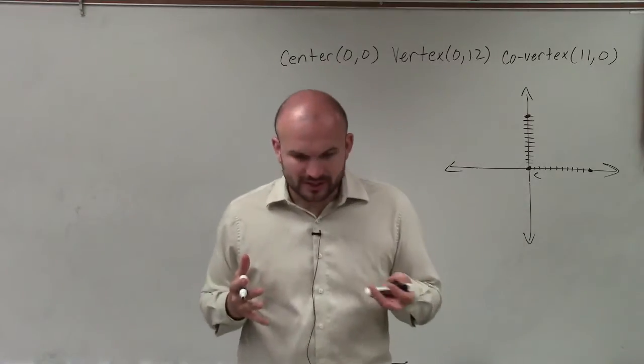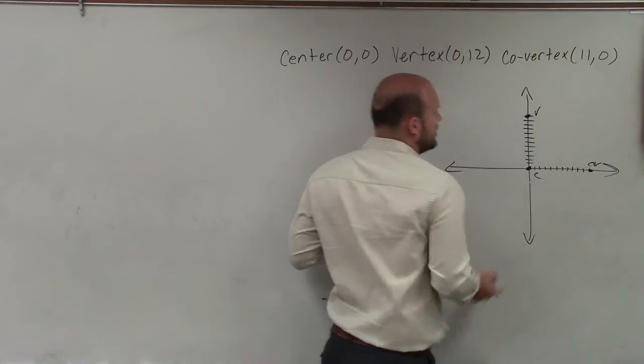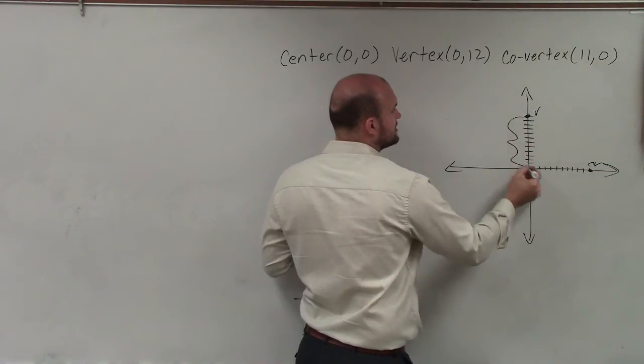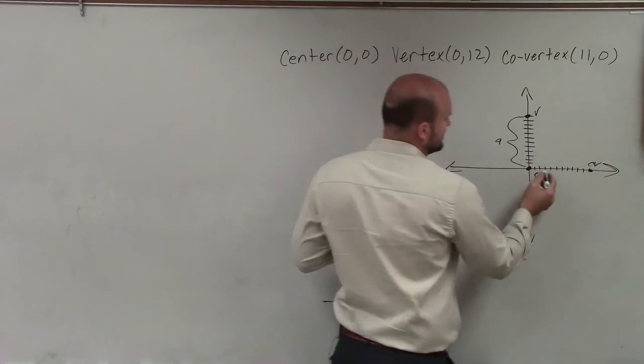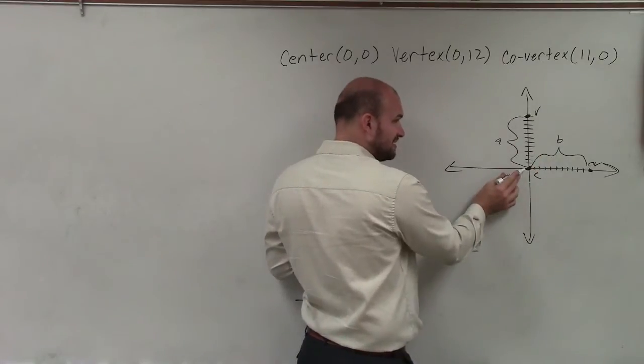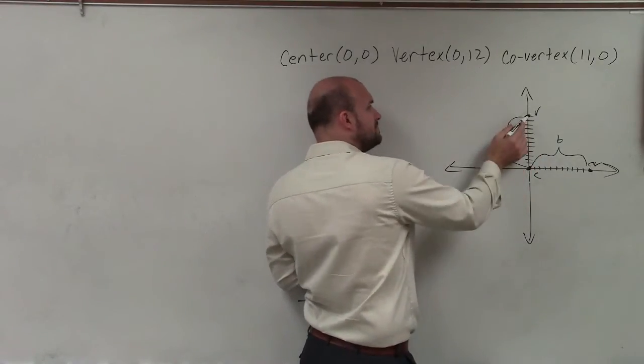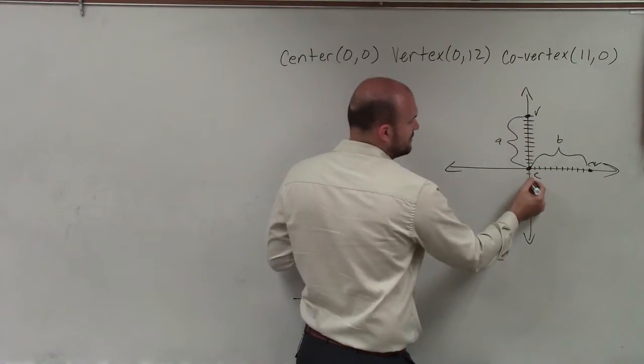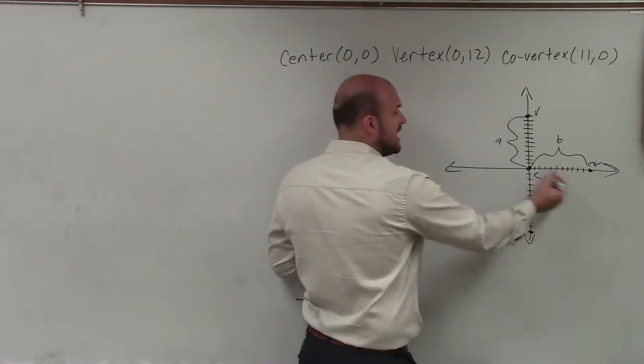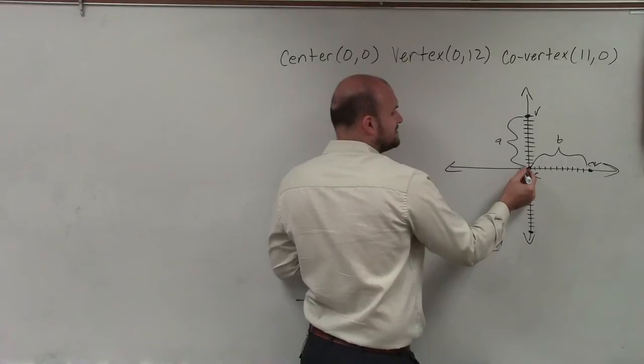Now remember, when we're looking into graphing one of these, the distance from the center to a vertex is A, where the distance from the center to the co-vertex is B. Now remember, the center splits the difference between your two vertices. So if I'm going up 12 to get to one vertex, I can go down 12 to get to my other vertex. And if I go to the right 11 to get to my co-vertex, I can go to the left to find the other co-vertex.